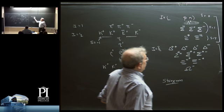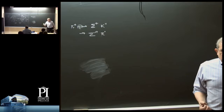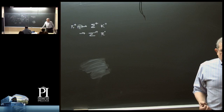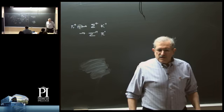These particles in isolation are stable with respect to strong interactions, although they can decay through the weak interactions. The strong interactions conserve isospin and strangeness. The electromagnetic interactions violate isospin because the proton has a different charge from the neutron. And the weak interactions will violate both of these. All of these statements will find a natural explanation within the standard model as the course proceeds.